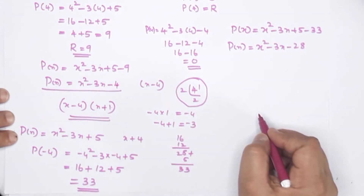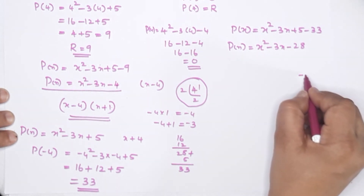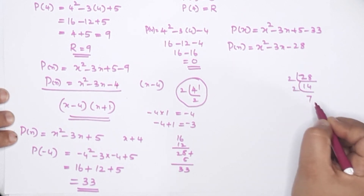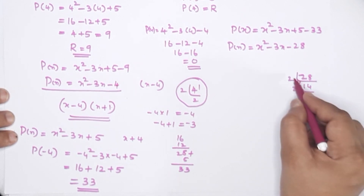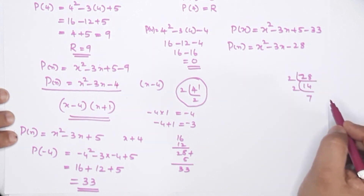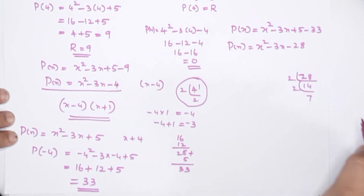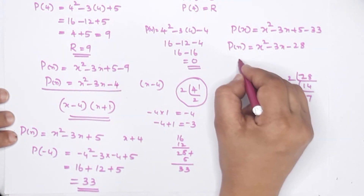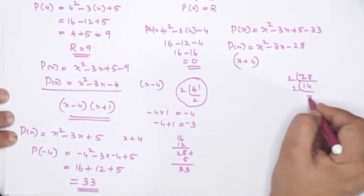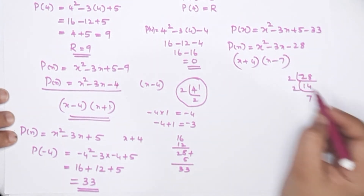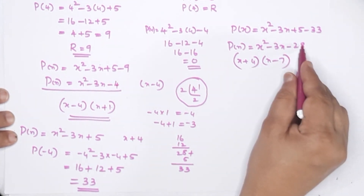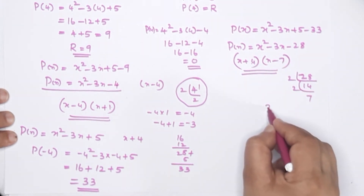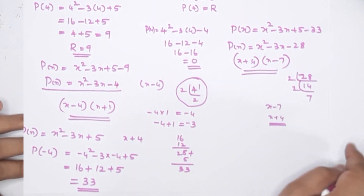Now this is our polynomial with minus 28. The factors of 28 are: 4 times 7. We need two numbers that multiply to minus 28 and add to minus 3. Since x plus 4 is already a factor, the other factor is x minus 7. So x squared minus 3x minus 28 equals x plus 4 times x minus 7.